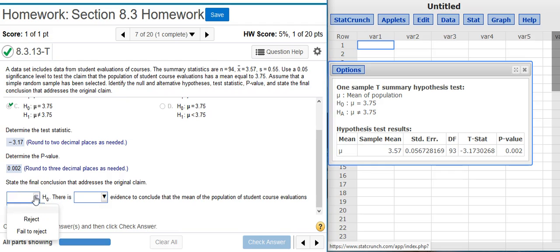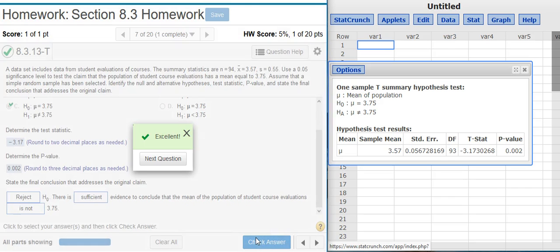And therefore, I'm going to reject the null hypothesis. Because I reject the null hypothesis, there is sufficient evidence. This final field needs to match the alternative hypothesis that we selected earlier. Here, the alternative hypothesis says that the mean for the population is not equal to 3.75. So I select that here. Now I check my answer. Excellent!